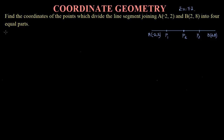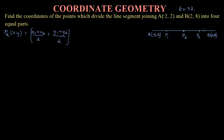Let me find the coordinates of point P2. Using the midpoint formula, P2(x, y) equals (X1 plus X2) divided by 2, comma (Y1 plus Y2) divided by 2. The two points are A and B. Point A is (−2, 2) and point B is (2, 8). So X1, Y1 corresponds to A and X2, Y2 corresponds to B.